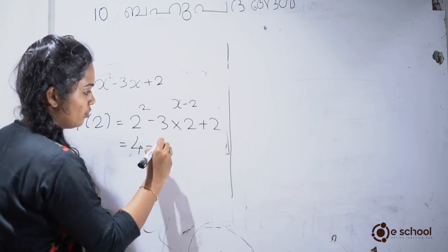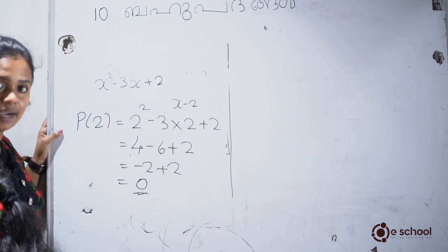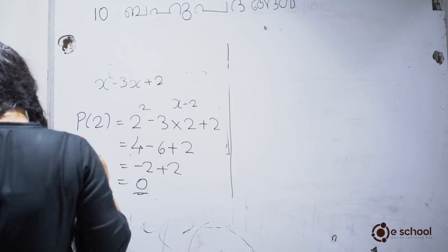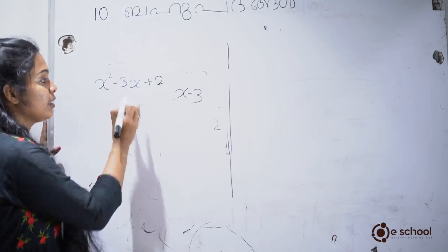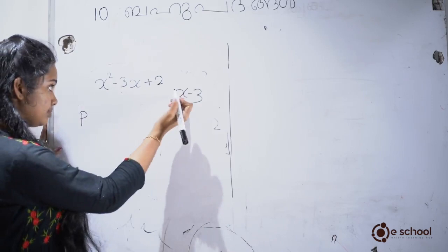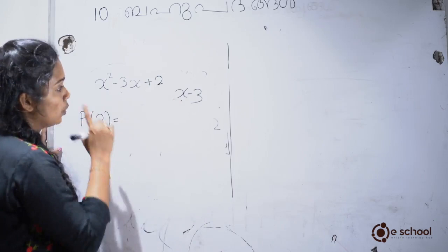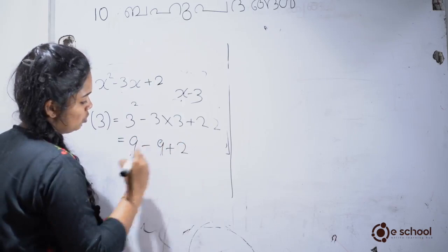P of 2 equals 2 squared minus 3 into 2 plus 2. 2 squared is 4. So 4 minus 6 plus 2 equals 0. Now let's check: P of 3 is equal to 3 squared minus 3 into 3 plus 2. 3 squared is 9, so 9 minus 9 plus 2 equals 2. So 2 is equal to 2.